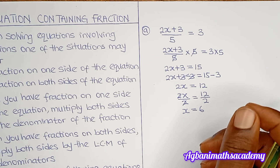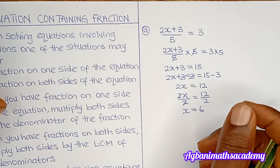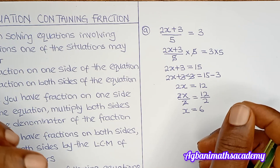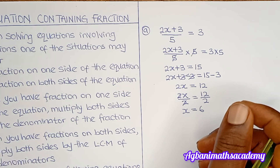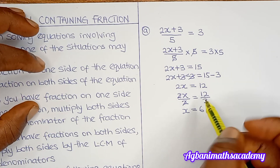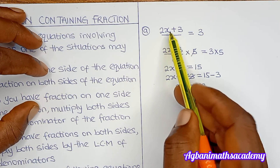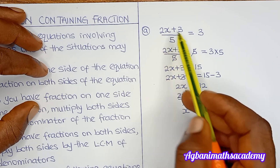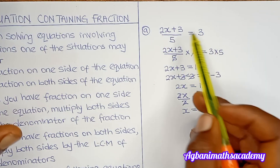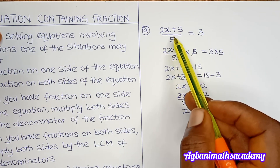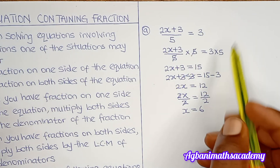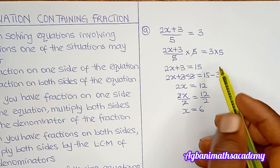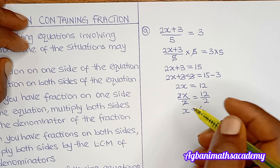Remember, solving an equation means finding the value of the variable that makes the left side equal to the right side. Substituting x = 6 back: 2 × 6 = 12, plus 3 is 15, and 15 ÷ 5 = 3. Our answer is correct.